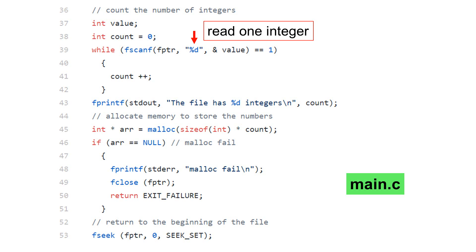fscanf %d means reading an integer. The return value of fscanf is the number of items successfully read. In this case, only one integer is read. Thus, if one integer is read successfully, fscanf returns 1.